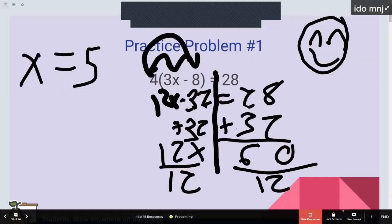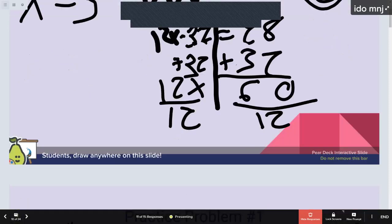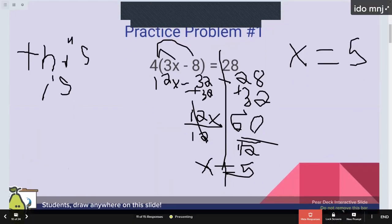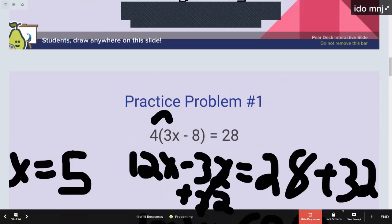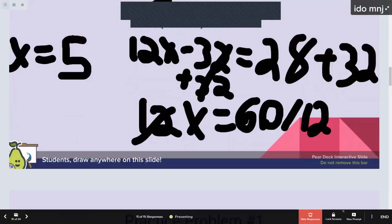All right. So let's take a look at what you guys have got. So x equals 5 is your answer. So good. They distributed through. 12x minus 32 equals 28. And that all looks pretty good.